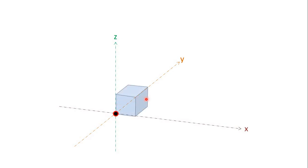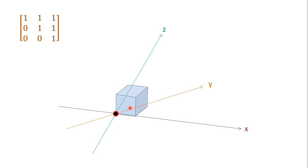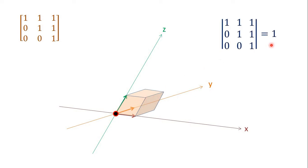Here is a 3D space and there are three basic unit vectors i, j, and k. These three unit vectors form a cube whose volume is one cubic unit. Suppose a matrix does a linear transformation on this 3D space and transforms the i, j, k vectors into three new vectors. Consequently, the cube is also transformed into a parallelepiped. The determinant of the matrix which did this transformation is the volume of this parallelepiped — the ratio of the volume of this parallelepiped to the volume of the original cube, which is one unit. Here the volume of the parallelepiped is 1, that is why the determinant is also 1.